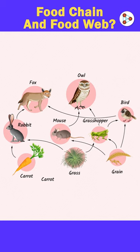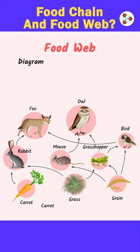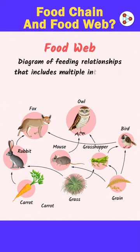Each source in turn has multiple sources of food. A food web is nothing but a diagram of feeding relationships that includes multiple intersecting food chains.